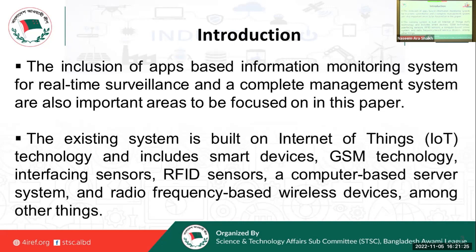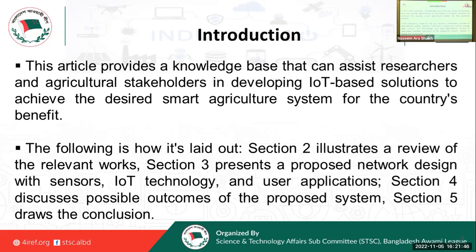The existing system is built on Internet of Things technology and includes smart devices, GSM technology, interfacing sensors, RFID sensors, a computer-based server system, and radio-frequency-based wireless devices, among other things. This article provides a knowledge base that can assist researchers and agricultural stakeholders in developing IoT-based solutions to achieve the desired smart agriculture system for the country's benefit.